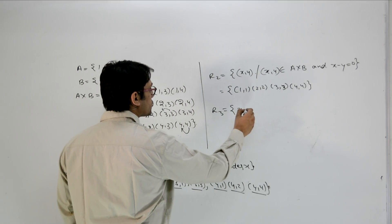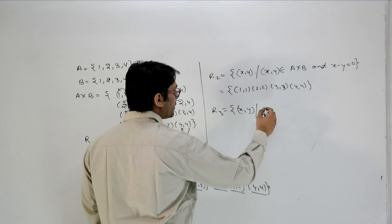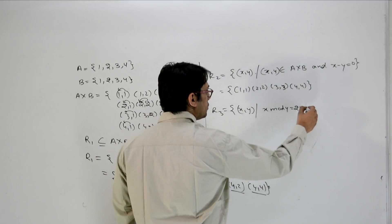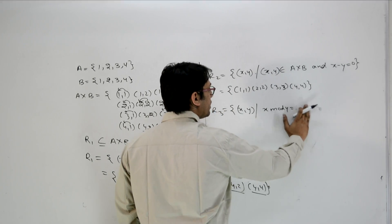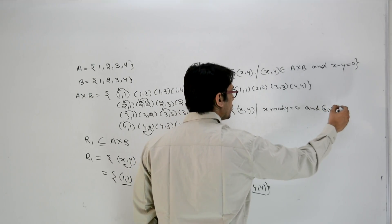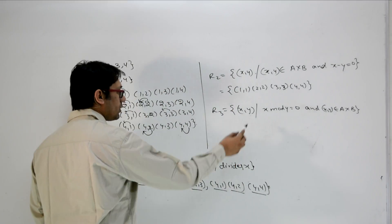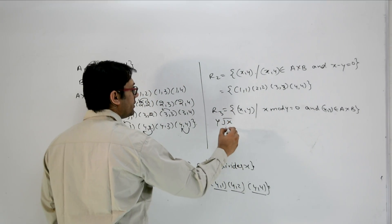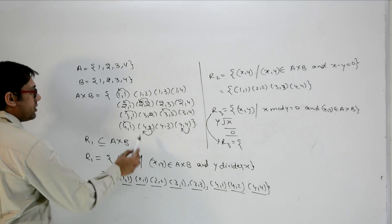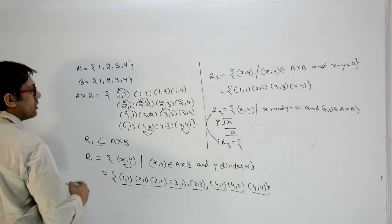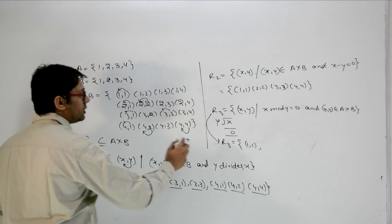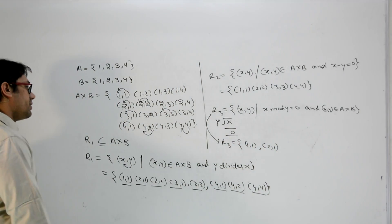So what are the items where x − y = 0? 1 − 1 = 0, 2 − 2 = 0, 3 − 3 = 0, 4 − 4 = 0. So R2 contains the elements (1,1), (2,2), (3,3), and (4,4). In the same way we can have a relation R3, defined as: R3 = { (x, y) | (x, y) ∈ A×B and x mod y = 0 }.